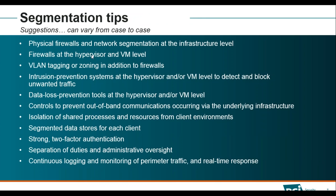Segmentation tips from PCI DSS: physical firewalls and network segmentation at the infrastructure level; firewalls at both the hypervisor and VM levels — most of the time you only see them at the VM level, but they are required at the hypervisor level too. VLAN tagging and zoning are required. IPS is required. DLP tools are required at both the hypervisor and VM levels to ensure data does not leak between different virtual machines. Strong two-factor authentication is a definite requirement. Segregation of duties is tricky when people in the backend are managing multiple clients — maker and checker must be different even at the cloud level.